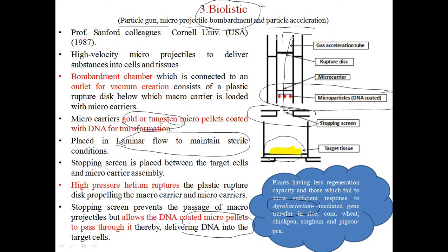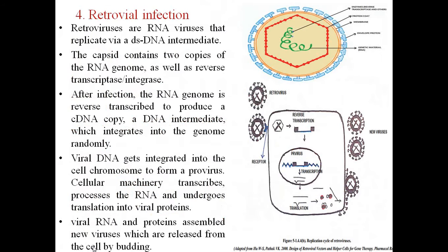This biolistic method was proven successful for plants that are not easily transformed through Agrobacterium vector-mediated gene transfer, specifically rice, corn, wheat, chickpea, sorghum, and pigeon pea.